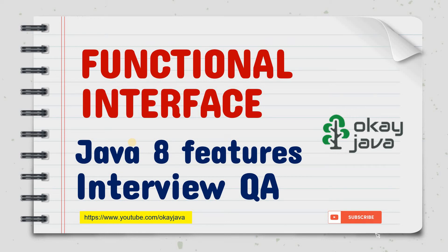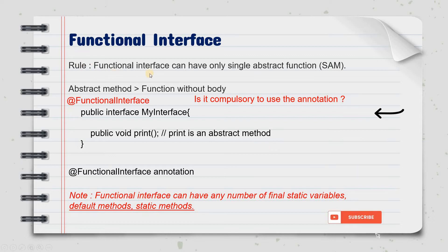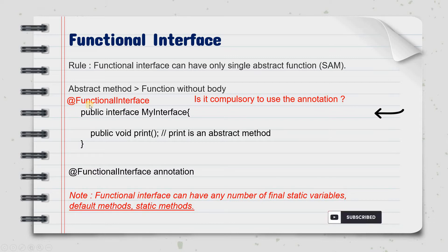Welcome back. Let's continue with the functional interface. We've already covered these points in the last video, but let me quickly revise in case you are new. A functional interface, as per the rule, can have only a single abstract method — SAM. So basically any interface having one abstract method is known as a functional interface. Java 8 introduced the annotation @FunctionalInterface to declare a functional interface, where you have only one abstract function.